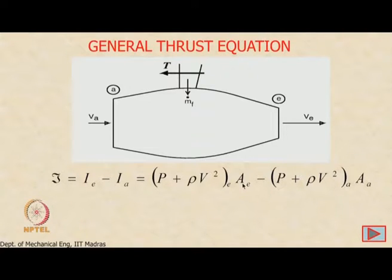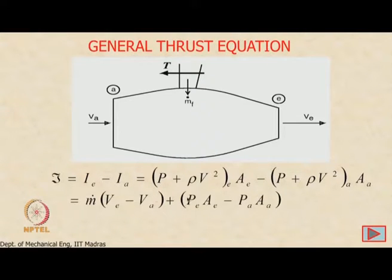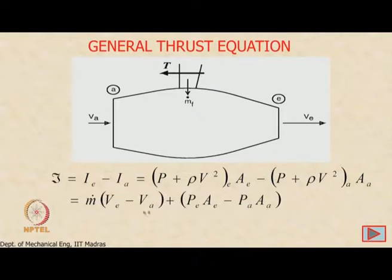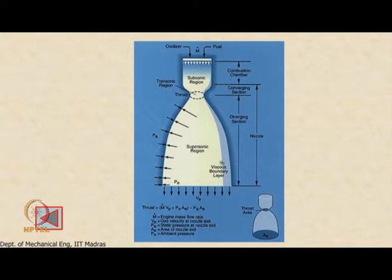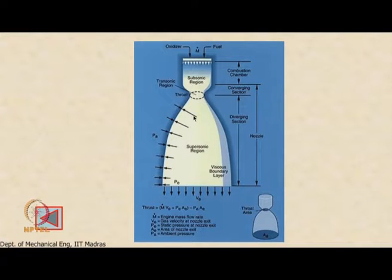The impulse function P plus rho v squared times A, with subscript E at the exit section and A at the inlet section. Using the continuity relation rho times v times A equals the mass flow rate, we simplify and rearrange. The net pressure force on any solid surface — which translates into thrust — must be evaluated after subtracting the ambient pressure from the local pressure.